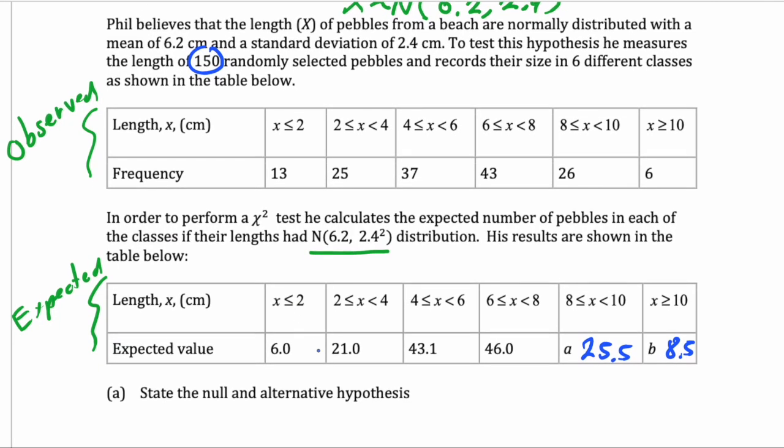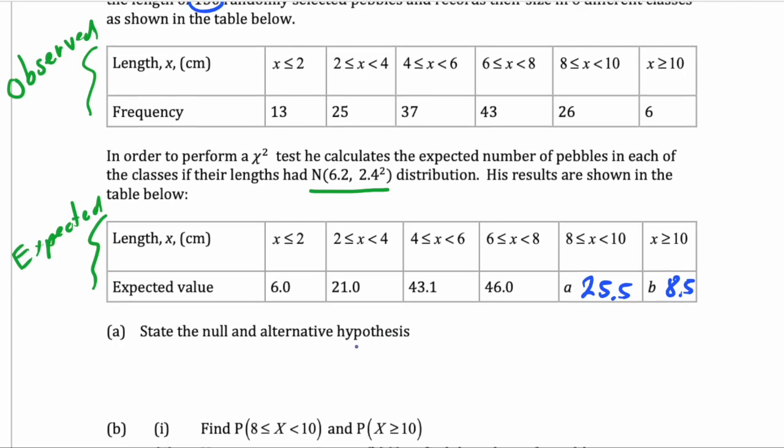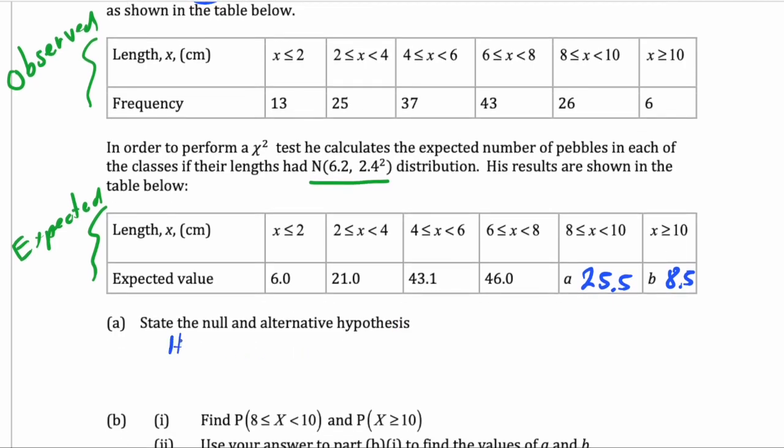So we need the expected values for the test, and our test starts now. We're going to do the null hypothesis, is that pebble lengths satisfy the distribution N(6.2, 2.4²).